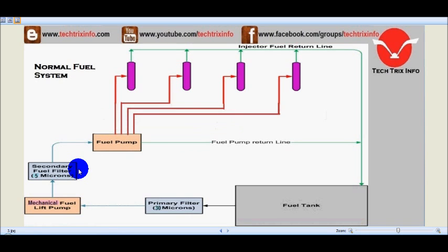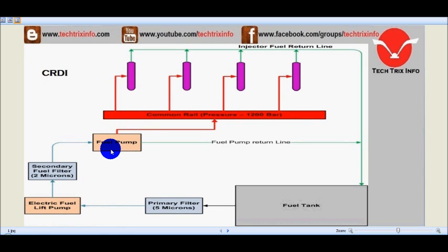Both systems have a fuel pump, but in a CRDI system, the fuel pump connection is connected to a common rail which operates at a pressure of 1200 bars.